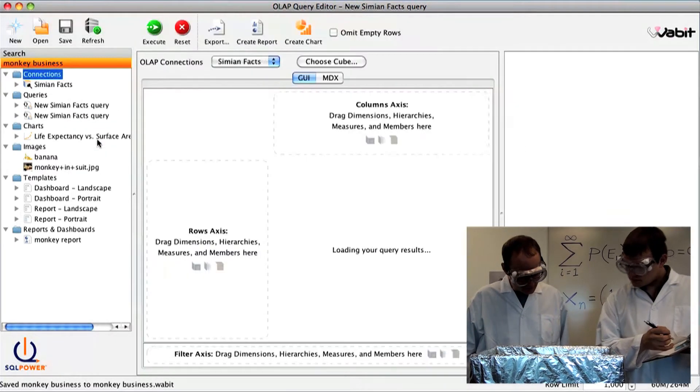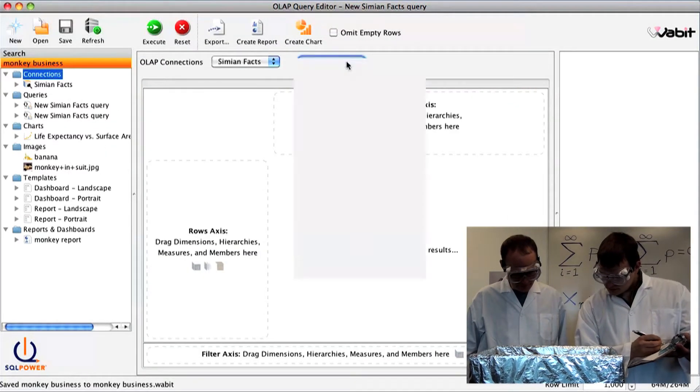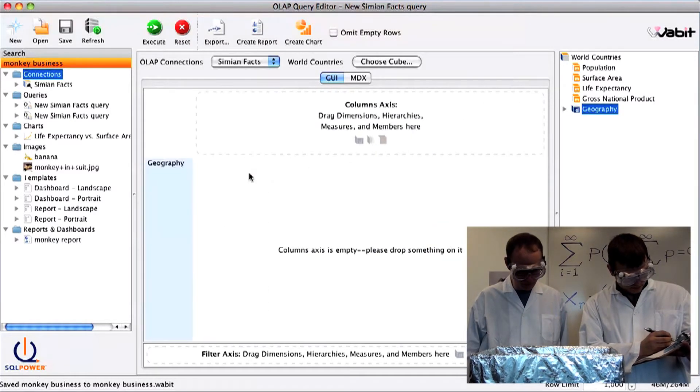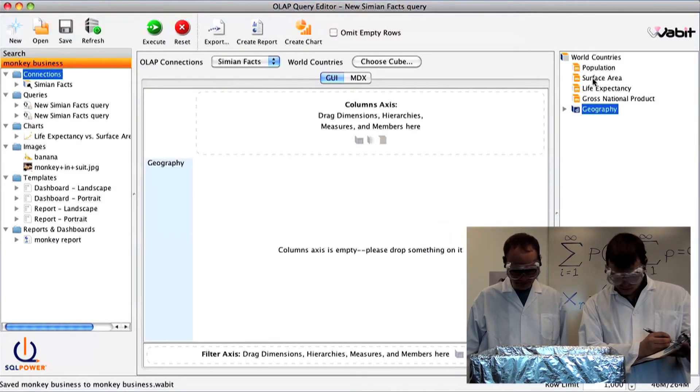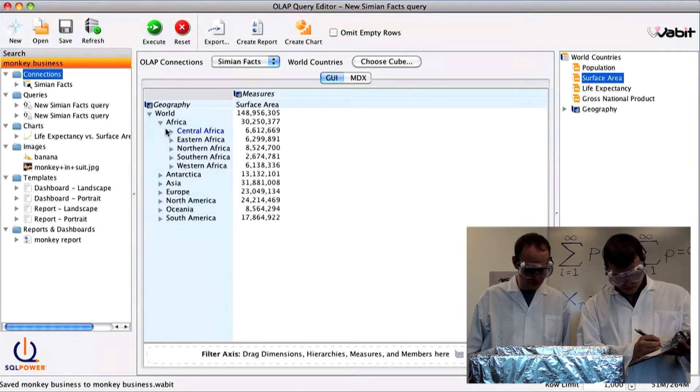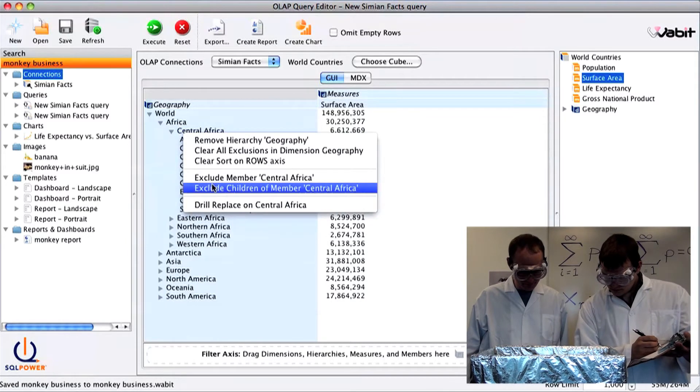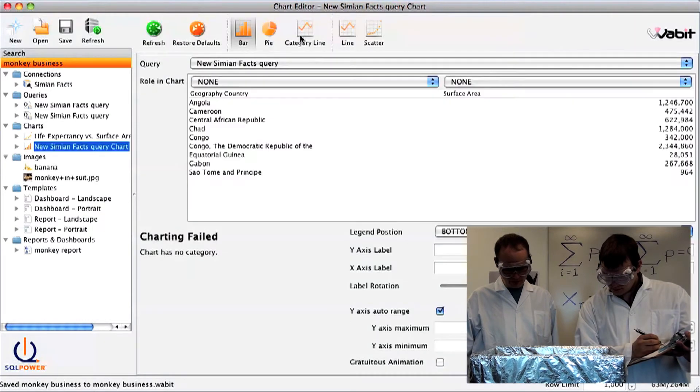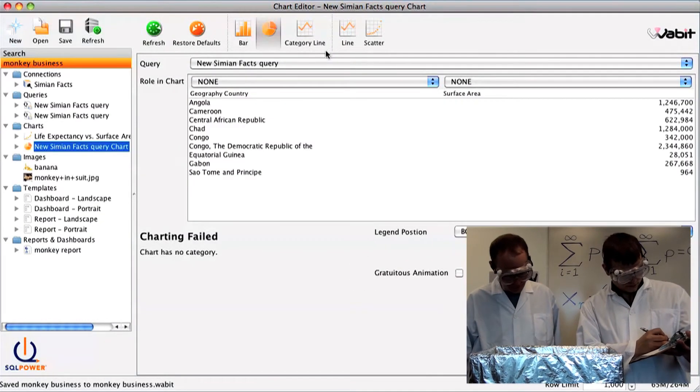Oh, here we are. Back to reporting. Our properly motivated monkeys are now producing a second OLAP query. Plotting surface area against geography. Looks like we're in Central Africa once again. They're getting ready to build a coherent report here.